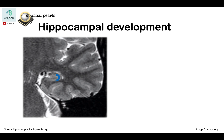This in blue is the cornu ammonis, while this is the dentate gyrus. Together, they form the hippocampus. Both of them have the same signal as the cortex because they are composed of grey matter. Notice also that the dentate gyrus and the cornu ammonis form interlocking Cs.